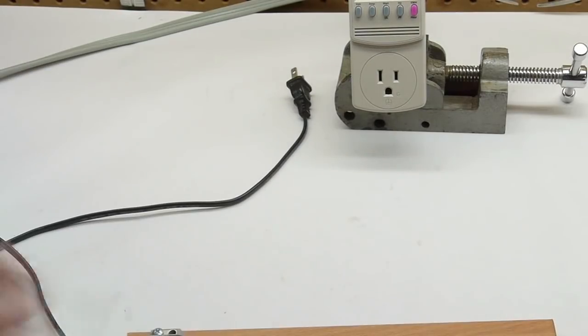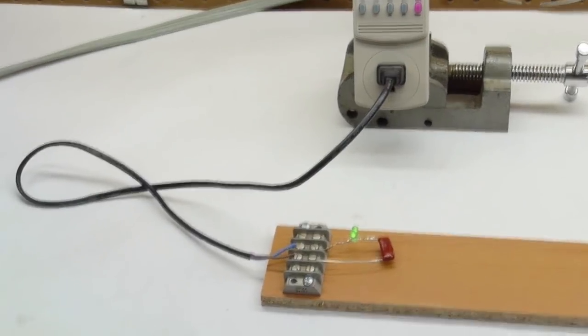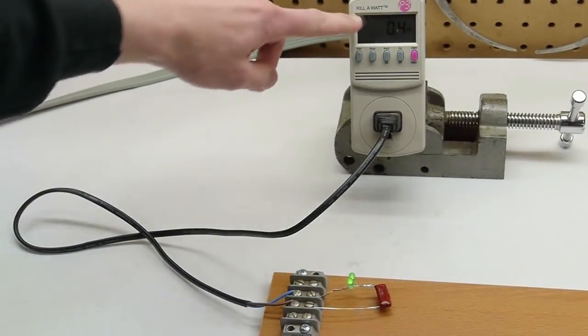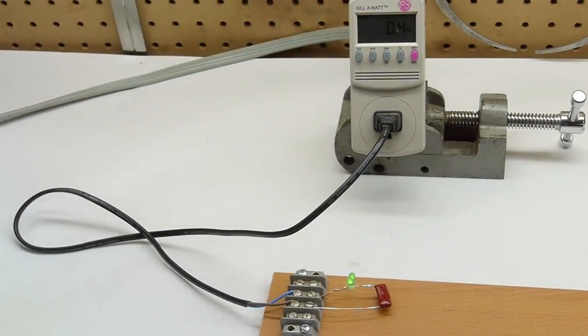So let's plug this one in. The LEDs are about as bright as they were the first time. But notice the power meter. It's only drawing 0.4 watts instead of 2.2. So our change, the change from a resistor to a capacitor, has actually made our circuit quite a bit more efficient. So let's take a look at why.